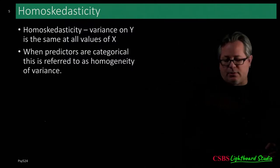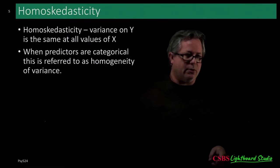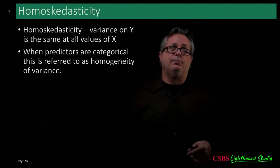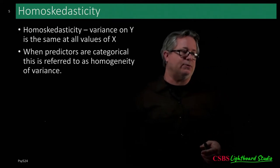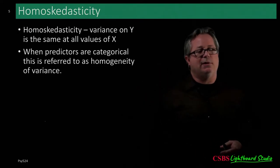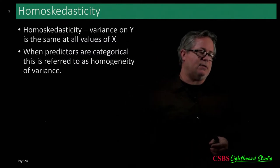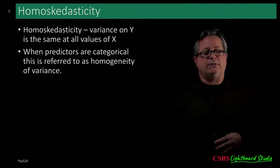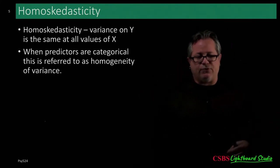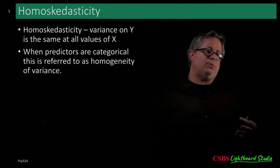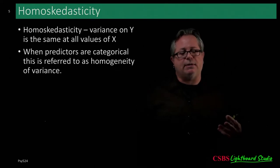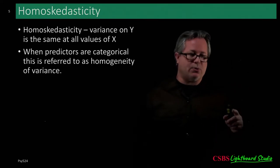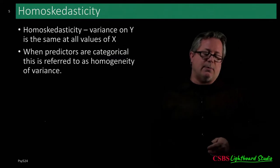We also assume homoscedasticity — variance on Y is the same at all values of X. When predictors are categorical, this is referred to as homogeneity of variance, which you've probably seen in ANOVA or t-tests and other between-groups tests.